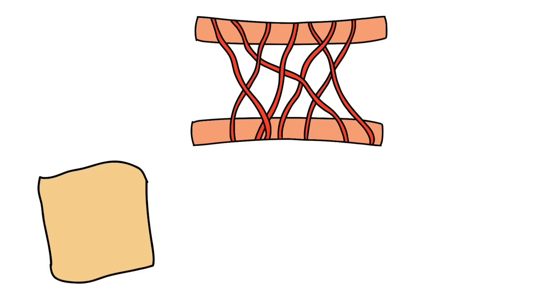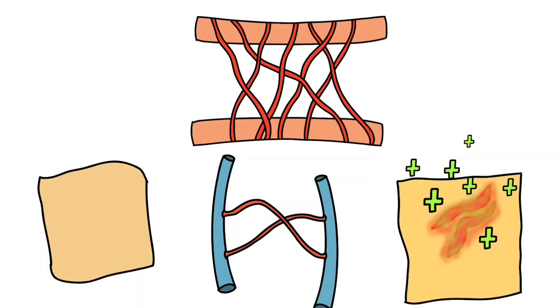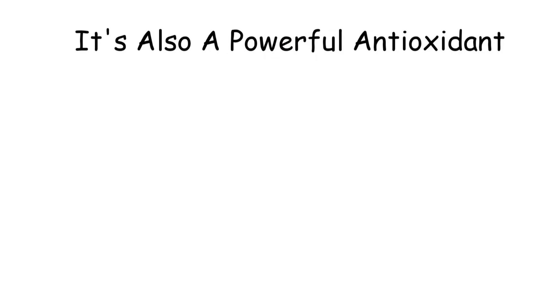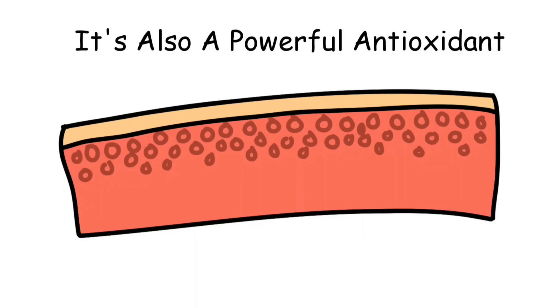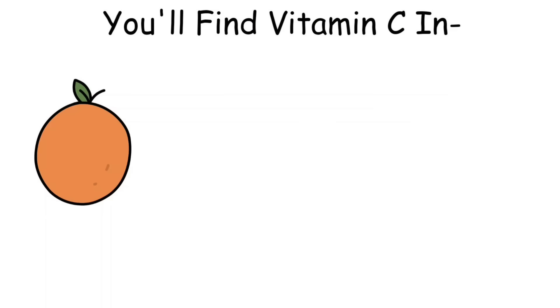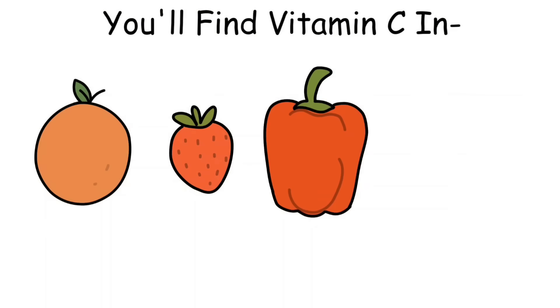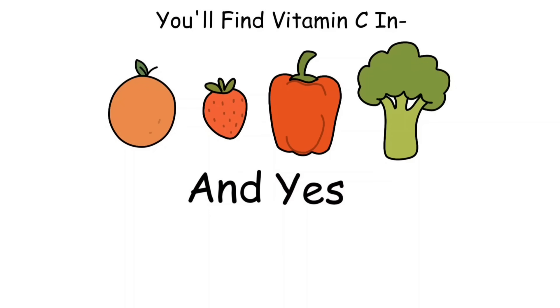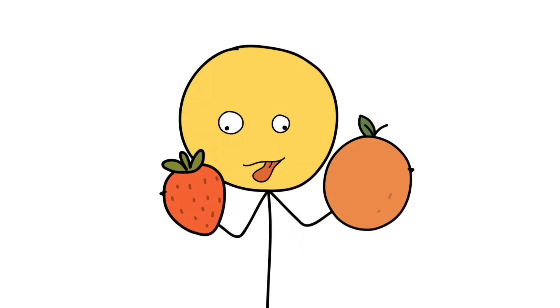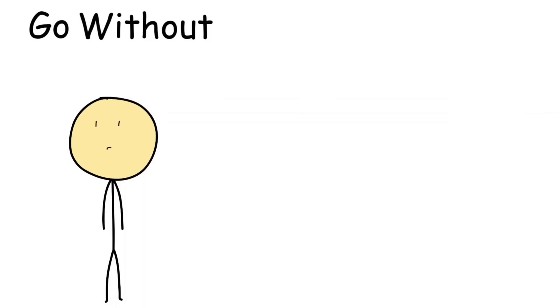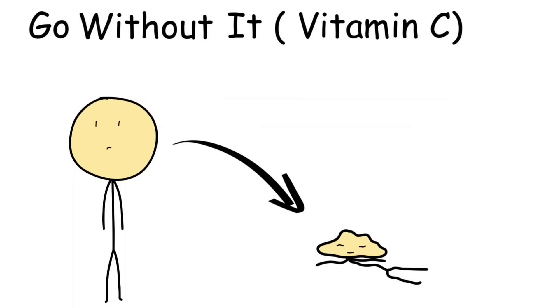On a biological level, vitamin C is essential for producing collagen, the protein that keeps your skin firm, your blood vessels strong, and your wounds able to heal. It's also a powerful antioxidant, protecting your cells from damage. You'll find it in oranges, strawberries, bell peppers, broccoli, and yes, limes. The human body can't make it or store much of it, so you need a steady supply from your diet. Go without it, and your body literally falls apart.